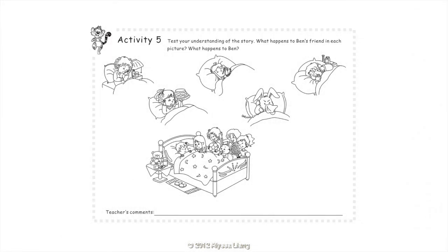Activity 5: Test your understanding of the story. What happens to Ben's friends in each picture? What happens to Ben? Leo has a tummy ache. Ivy has a fever. Kenny has a cough. Daisy has an earache. Wabbit has a cold. Ben is sick.